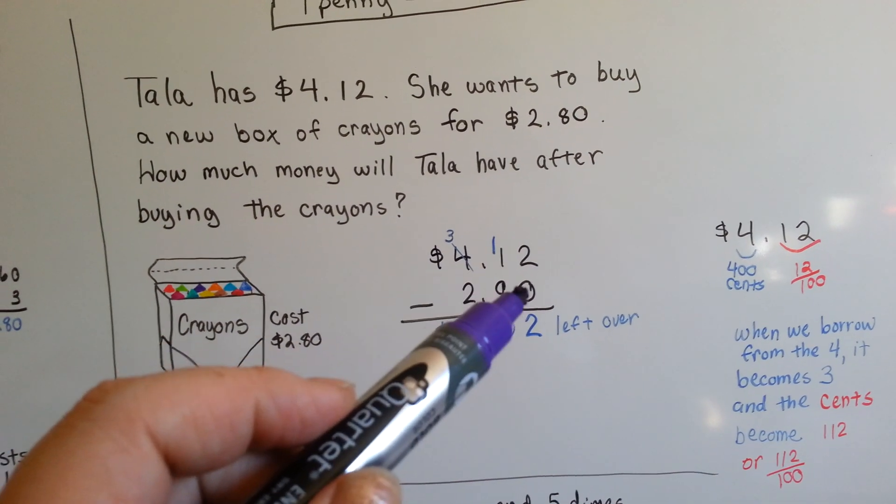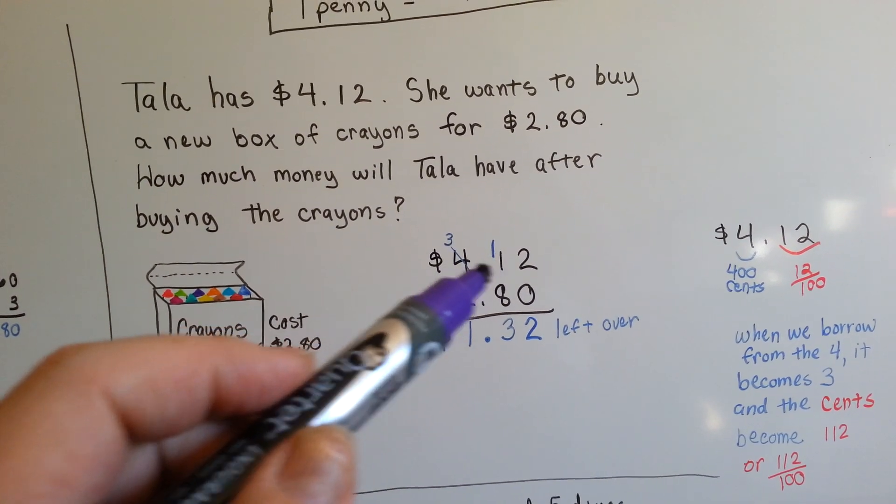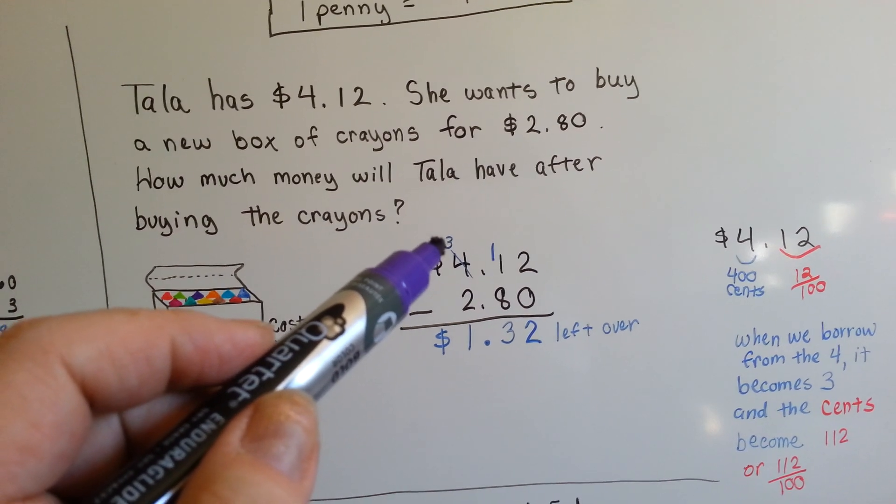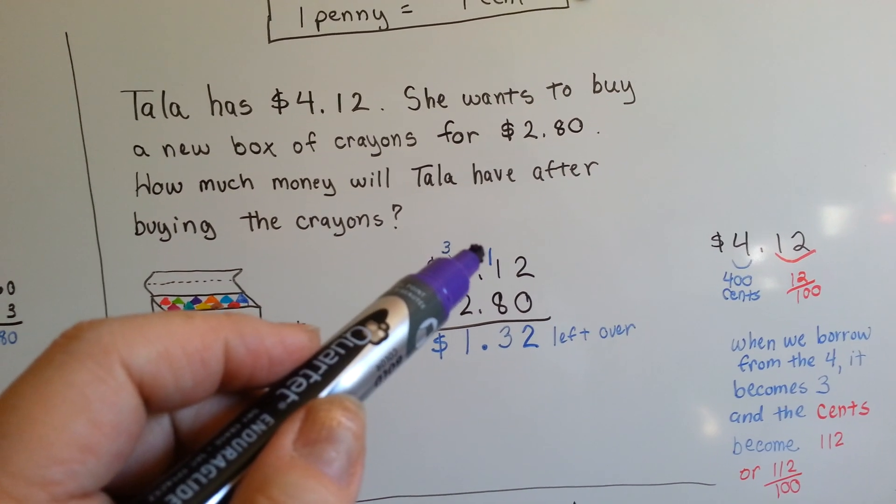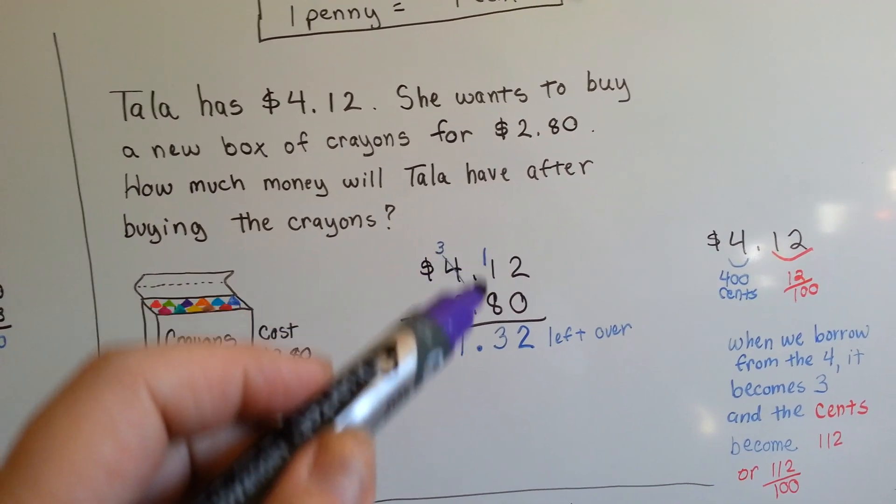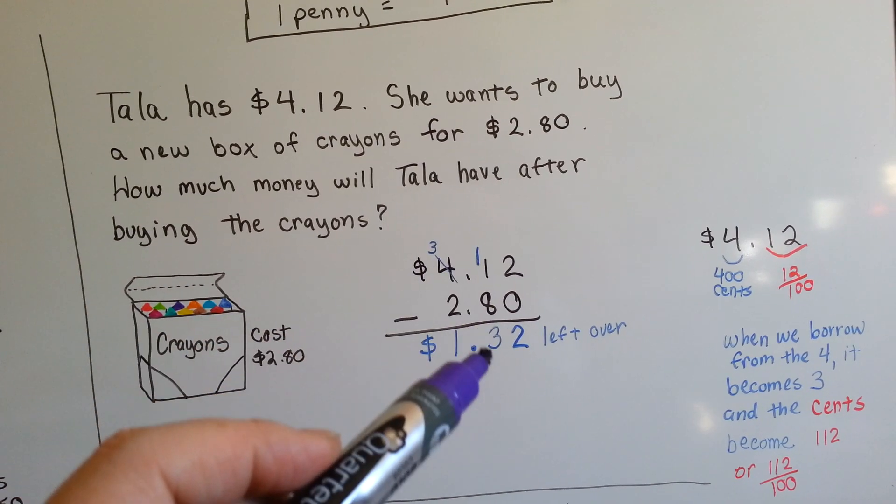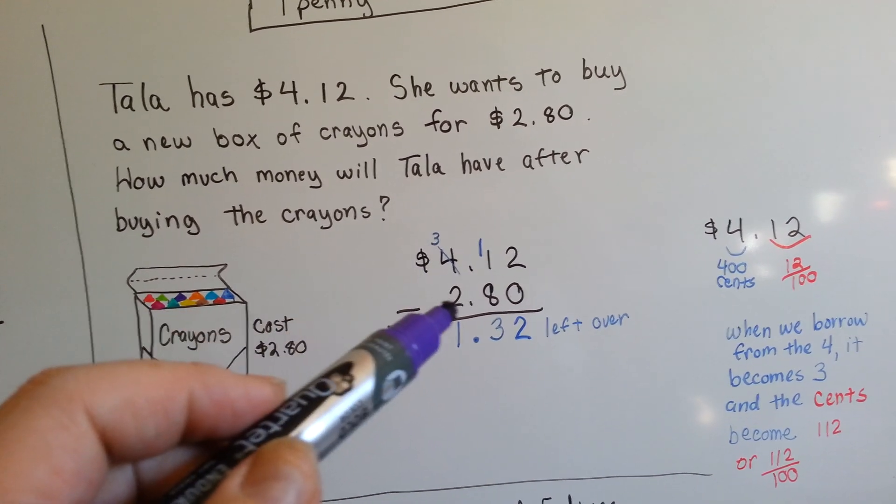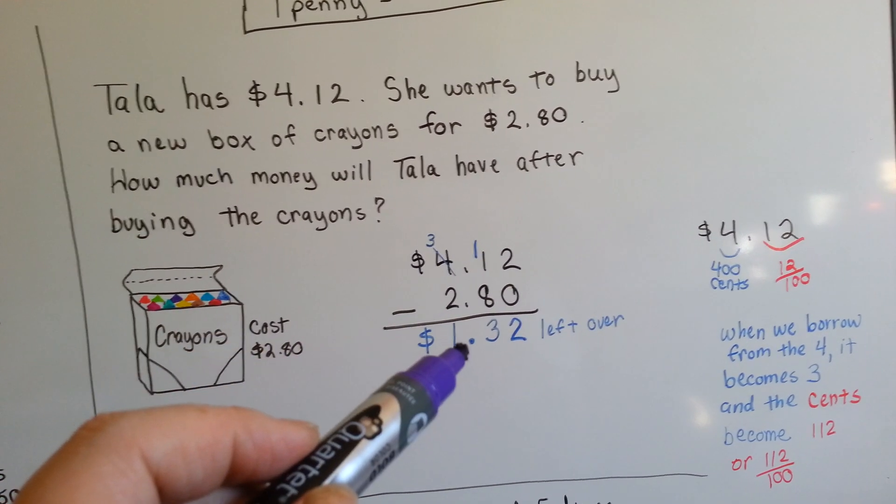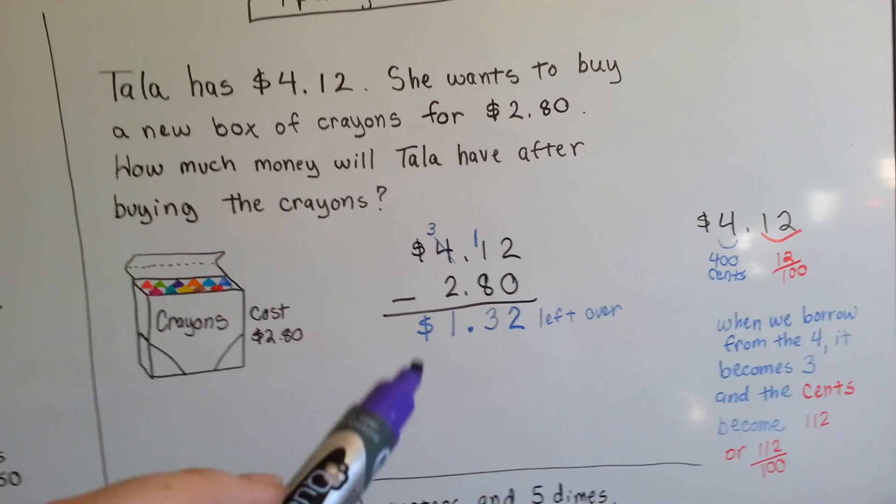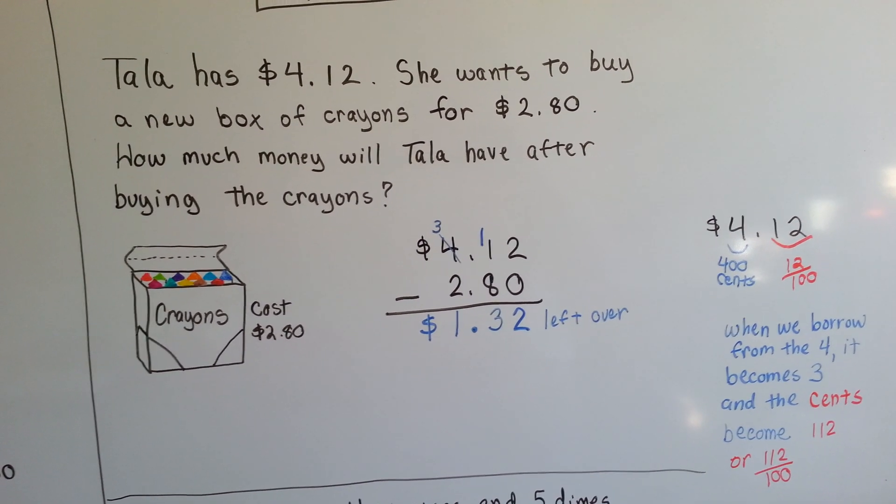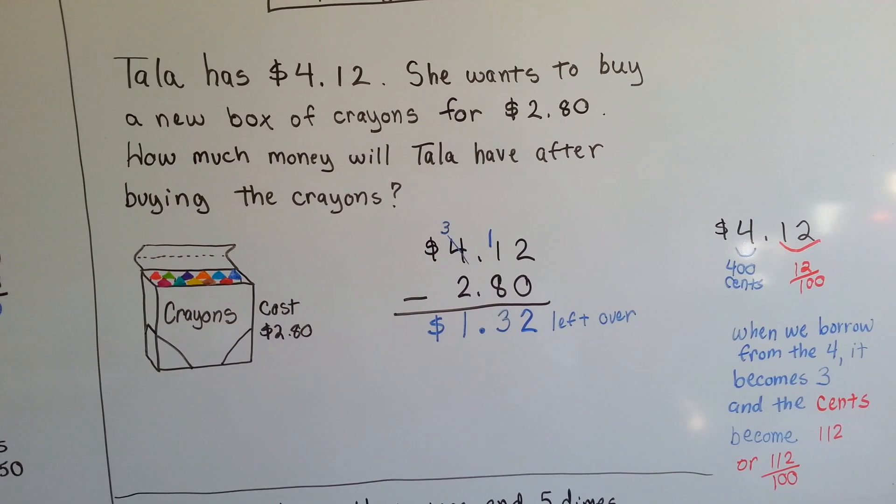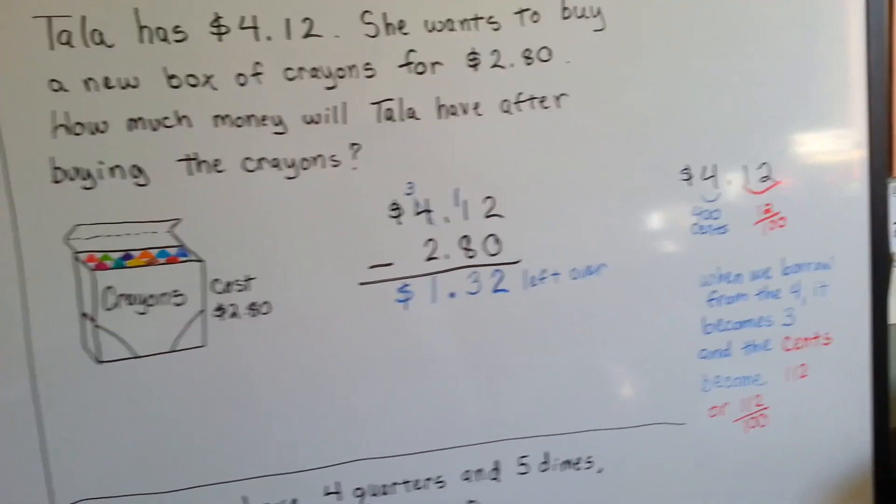So, two take away zero is two. One take away eight we can't, so we have to borrow from the four, which becomes a three, and it gives one to this column, so it becomes eleven take away eight, which is three. Three take away two is one. We drop our decimal point down and put our dollar sign in, and that's a dollar thirty-two left over that she can save, and now she has this new box of crayons.